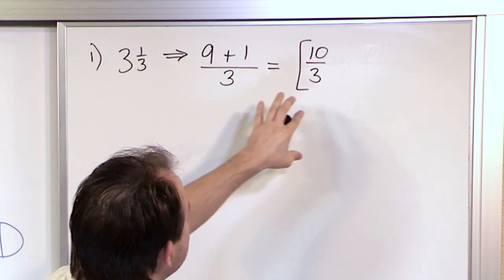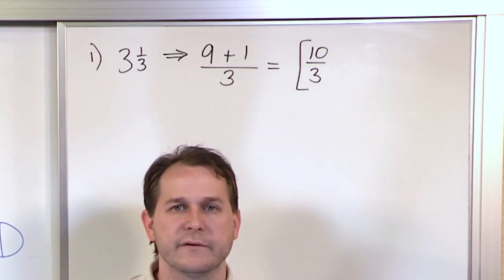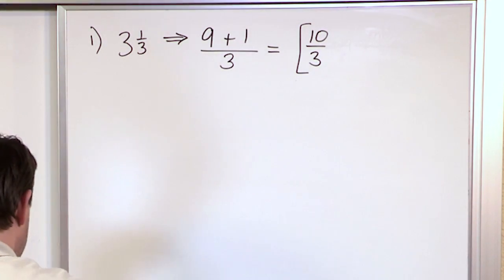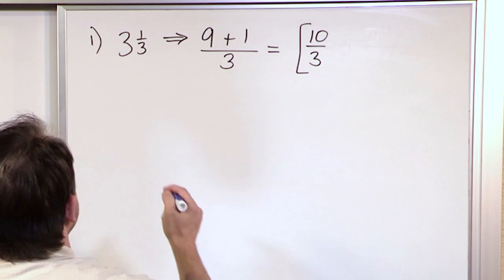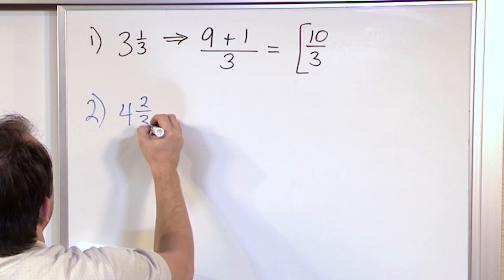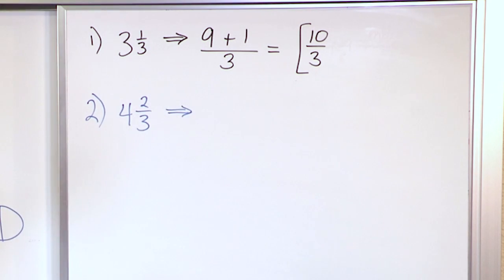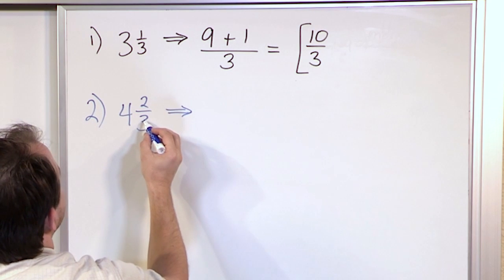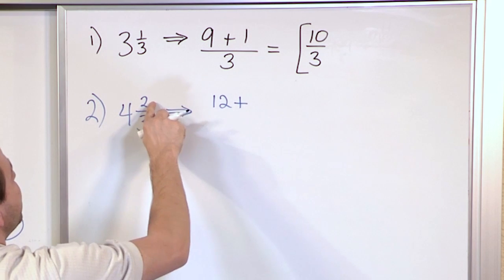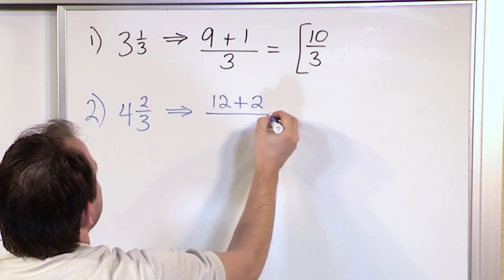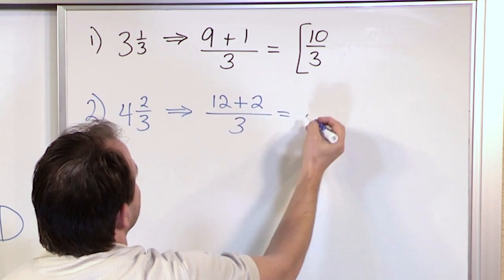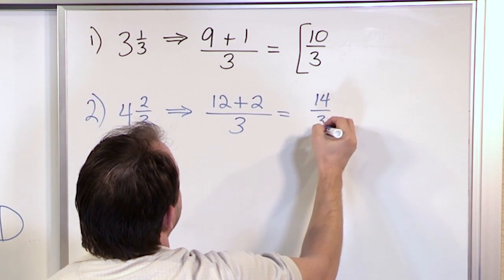Here is a mixed fraction and here is an improper fraction, both representing the exact same amount. Now with number two: we have four and two thirds. You take the bottom number and multiply it by the four — three times four is 12 — then add the numerator, which is two. The bottom stays the same, which is three. So 12 plus two is 14 over three, or 14 thirds.